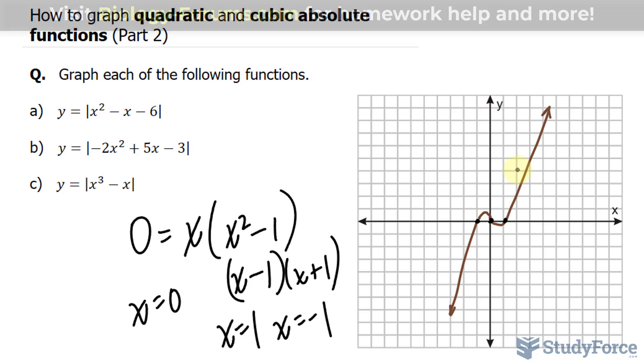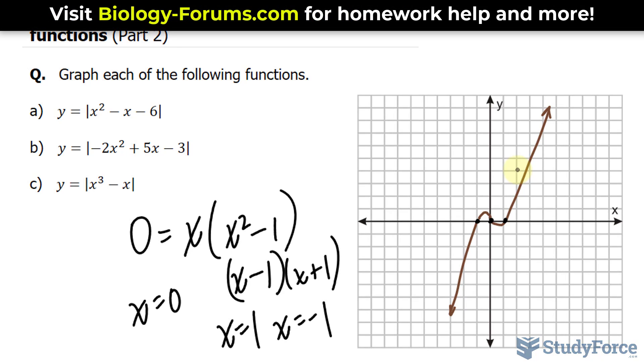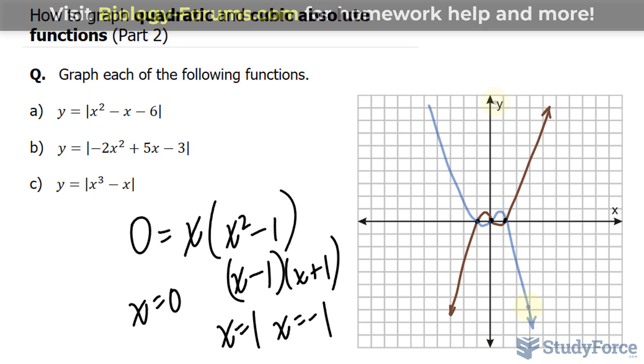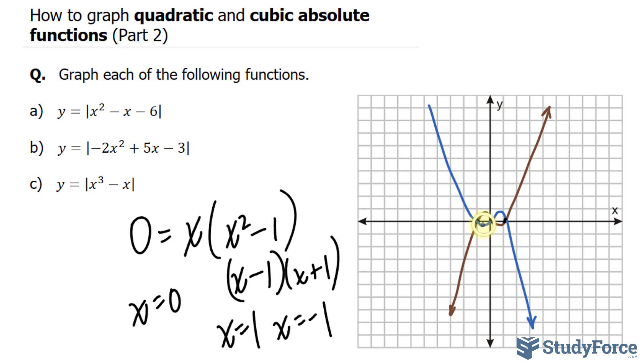Now the opposite would have been true had this been negative. So technically, you would have had a reflection. Substituting now points in between, you would find out that none of these outputs would exist. And there you have it. That is how to graph quadratic and cubic absolute functions.